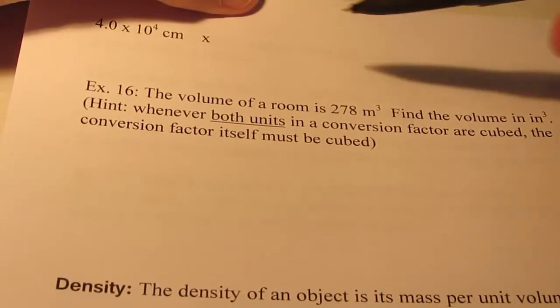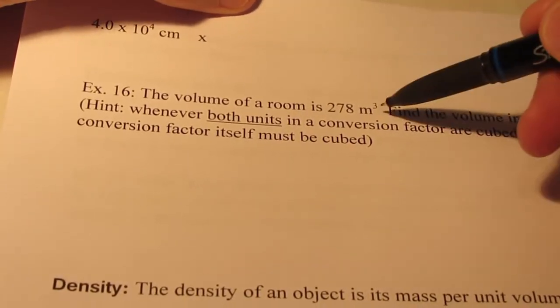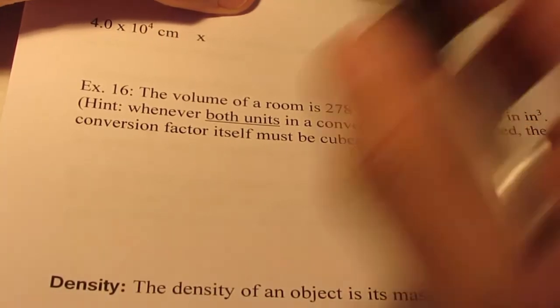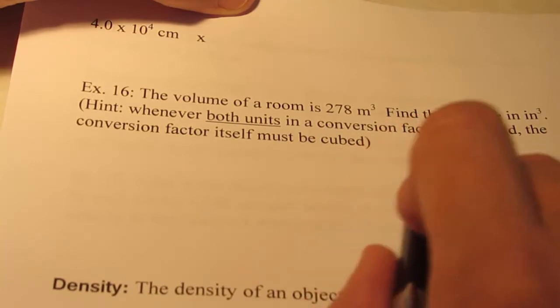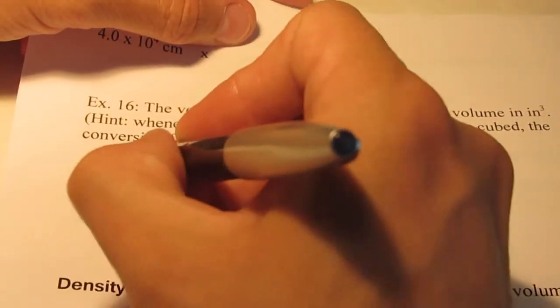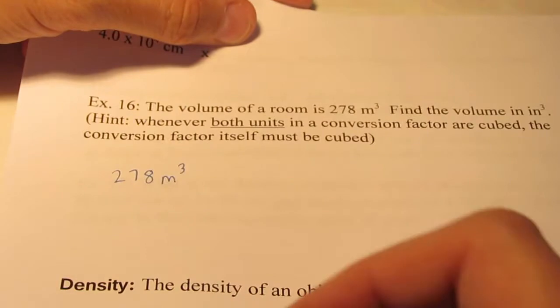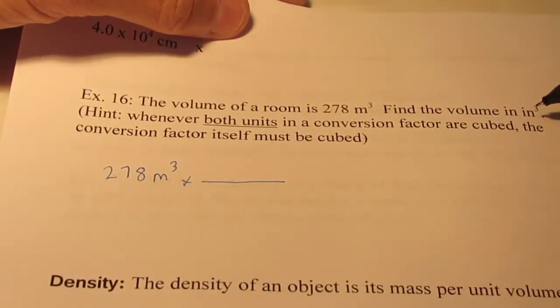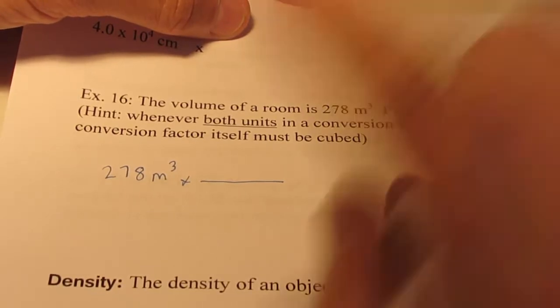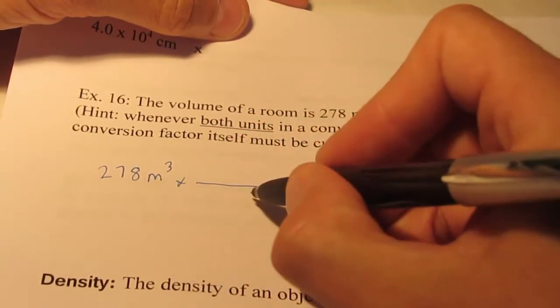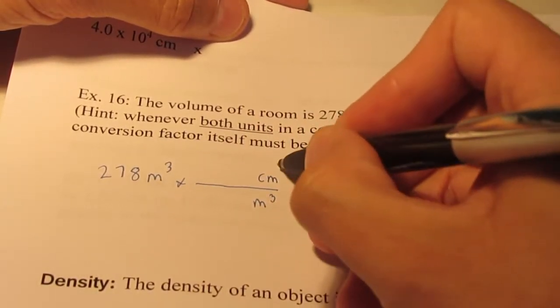Let's take a look at example 16. The volume of a room is 278 cubic meters. Find the volume in cubic inches. Now hint, whenever both units in a conversion factor are cubed, the conversion factor itself must be cubed. We're going to start with 278 cubic meters and hop out of meters cubed and get into centimeters cubed.